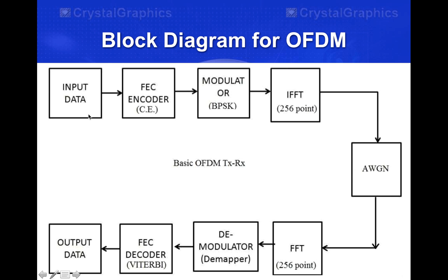The transmitter has input data, an FEC encoder or convolution encoder, and a modulator — in this project that is BPSK or QPSK — followed by IFFT. In the channel it is AWGN, used as a function. The receiver then has FFT, demodulator, FEC decoder, and output data.